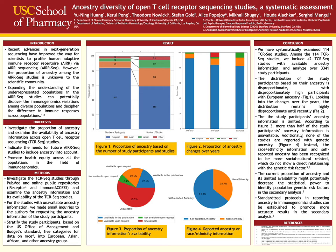We eventually included 42 studies with available ancestry information and analyzed the ancestry information over 3,341 study participants. According to Figure 1, we can note that the proportion of ancestry of the study participants in the T-cell receptor sequencing studies is mainly European. More than half of the studies are conducted under European ancestry, indicating that the proportion of ancestry in T-cell receptor sequencing studies is highly disproportionate.